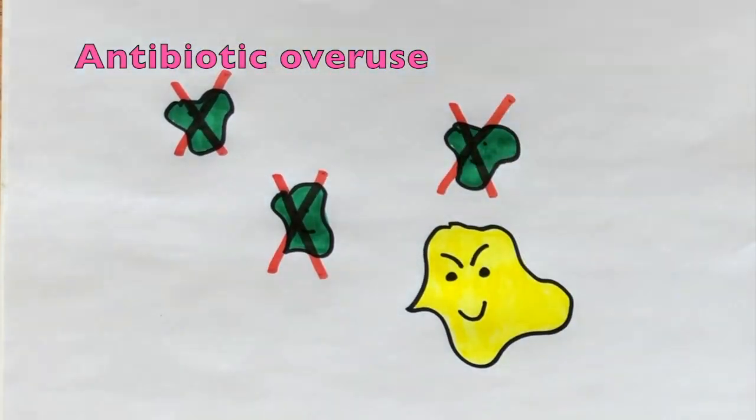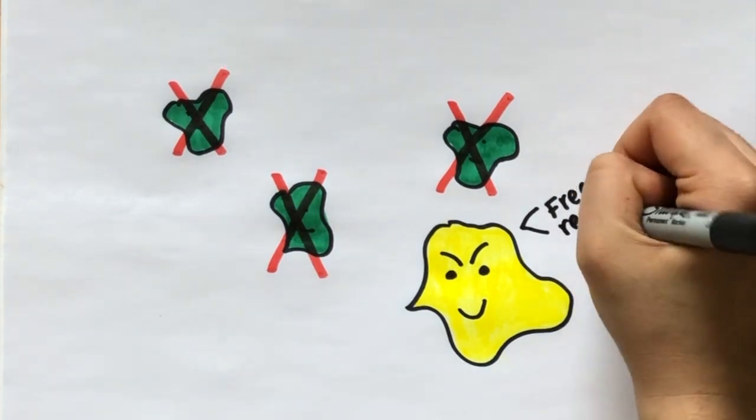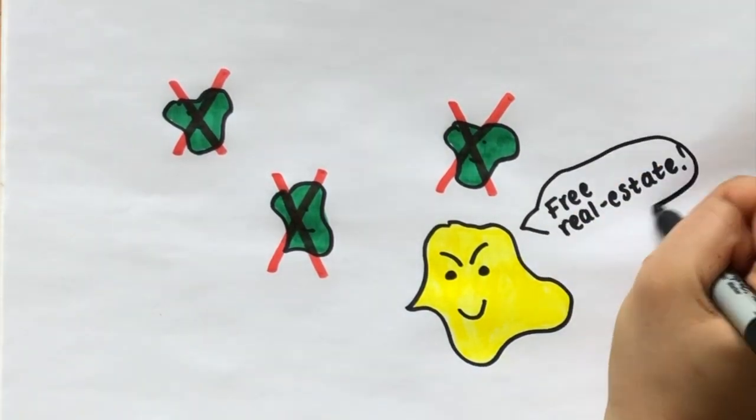Antibiotic overuse is the biggest cause of antibiotic resistance. Killing weaker bacterial strains allows mutated strains to spread. An antibiotic resistance epidemic is in our future if antibiotics keep being rendered ineffective.